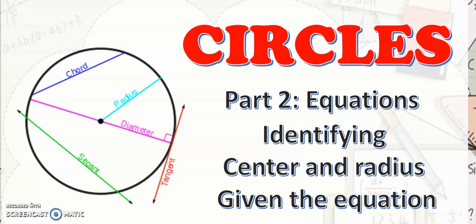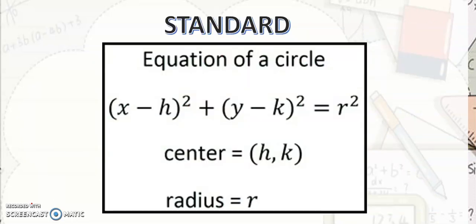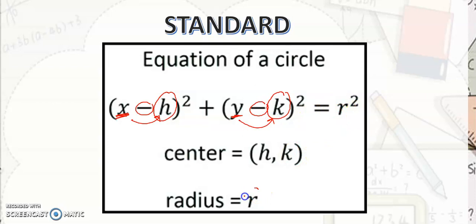Let's have the standard equation of a circle. The standard equation is: quantity x minus h squared plus quantity y minus k squared is equal to r squared. Where h and k is your center and r is your radius. To get h and k, identify the number given and get the opposite sign of it. Remember that x always comes with h, and y always comes with k. To get r, take the square root of r squared.